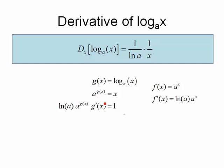Now that I've gone ahead and written out this expression, I'll solve it for g prime of x. And when I do that, I'm going to end up getting g prime of x is equal to 1 over ln of a times x.